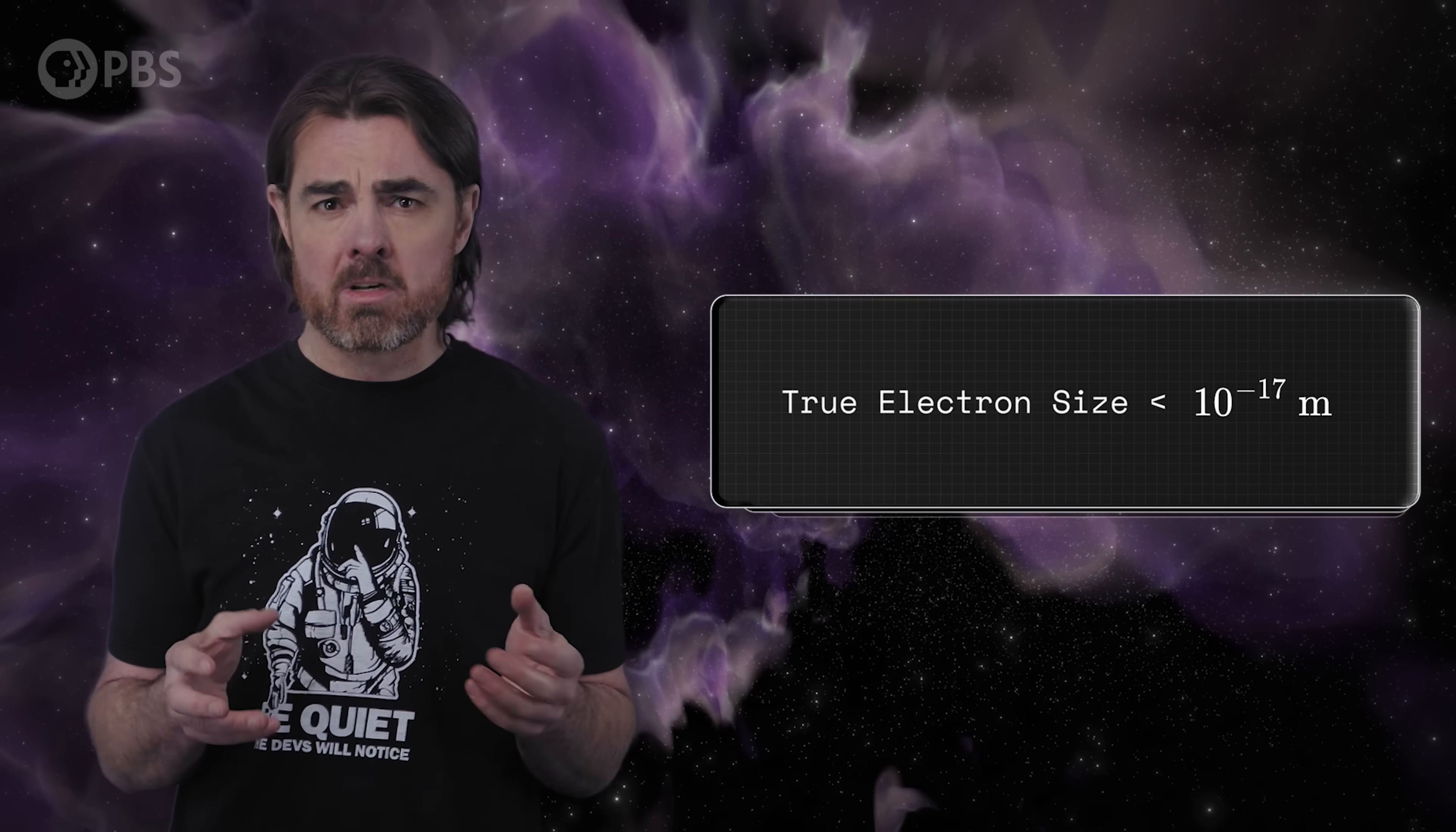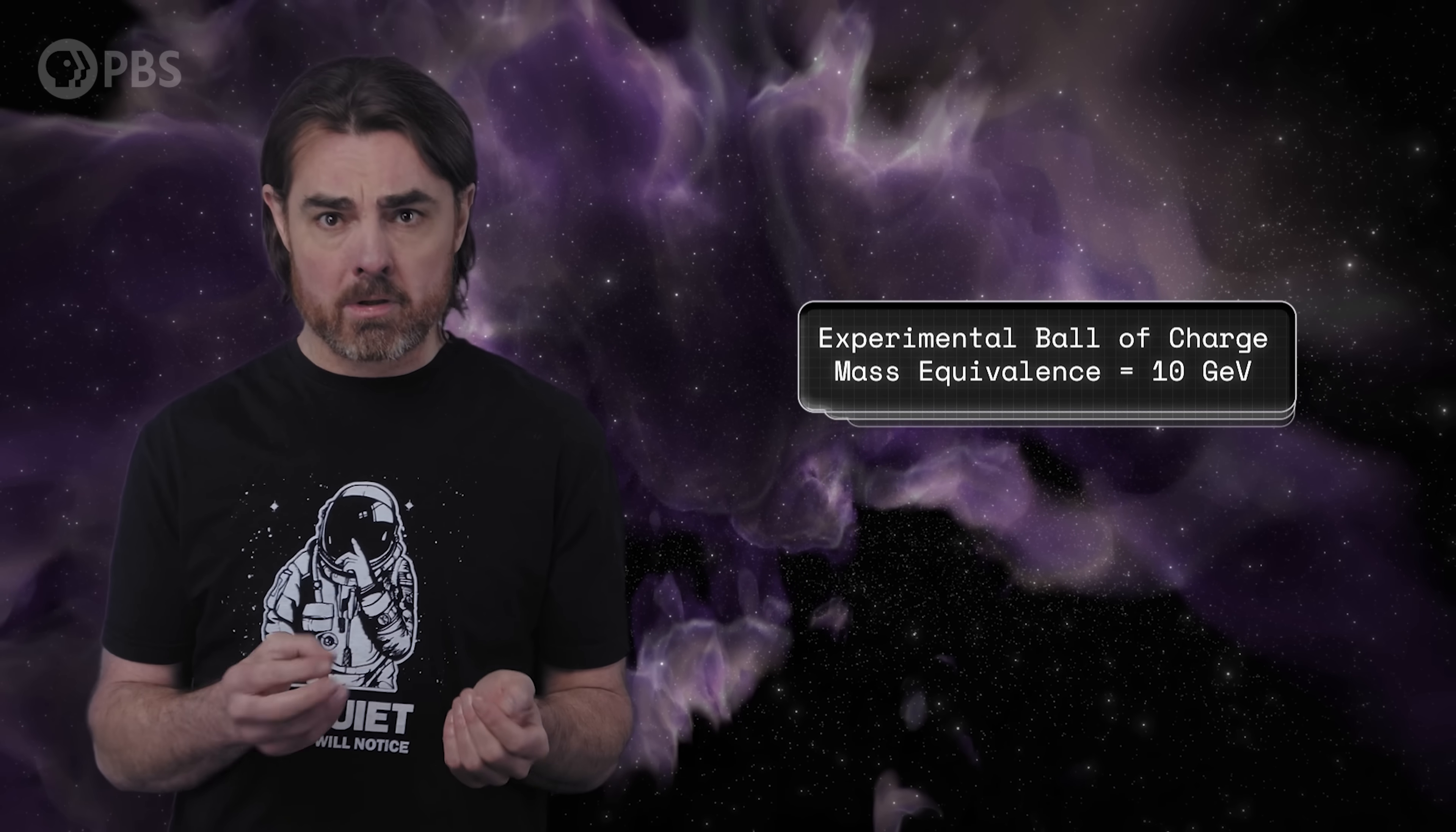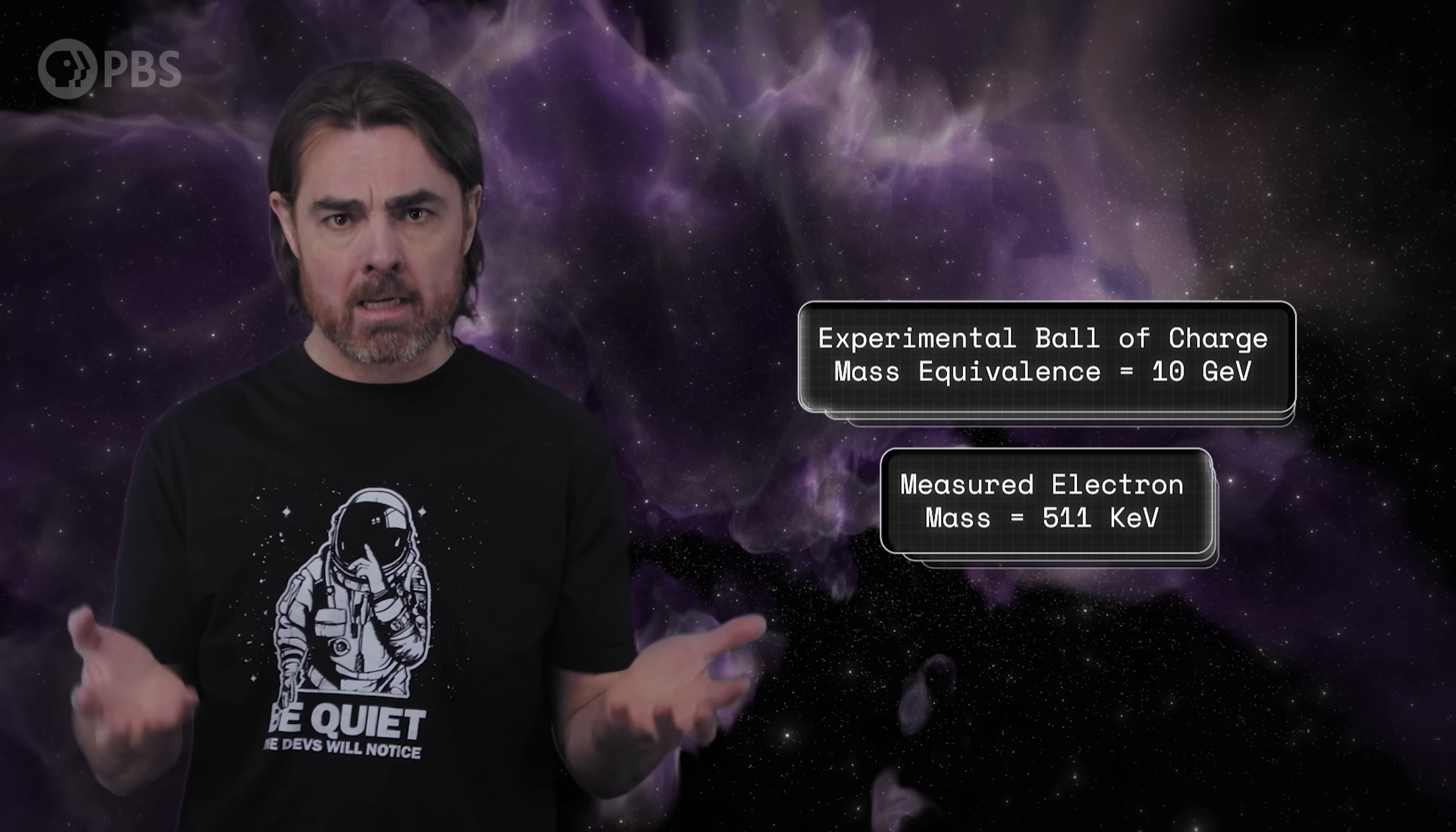Our experiments tell us that the true size of the electron is smaller than 10 to the power of minus 17 meters, at least 100 times smaller than the classical electron radius. But if we continue to crush our ball of charge down to that size, the mass equivalence of that potential energy is 10 gigaelectron volts, which is 20,000 times larger than the actual measured electron mass of 511 kiloelectron volts. And if our electron really is point-like, having no size, then Coulomb's law gets a zero in the denominator, and the energy summed all the way to that central point is infinite.